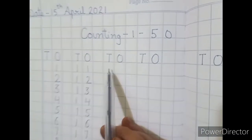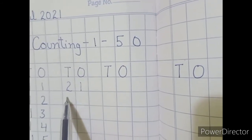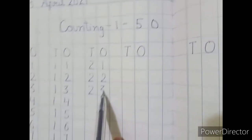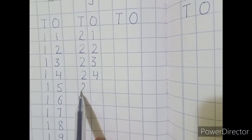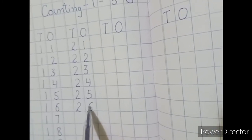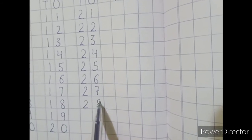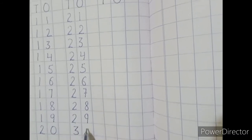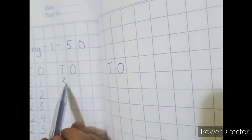Your next digit is 21: write 2-1. Then 2-2 is 22, 2-3 is 23, 2-4 is 24, 2-5 is 25, 2-6 is 26, 2-7 is 27, 2-8 is 28, 2-9 is 29, and last one is 3-0 which is 30.